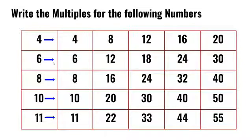Next, we have to write the multiples of 6. 6 ones are 6, 6 twos are 12, and so on. So 6, 12, 18, 24, and 30 are the first 5 multiples of 6.